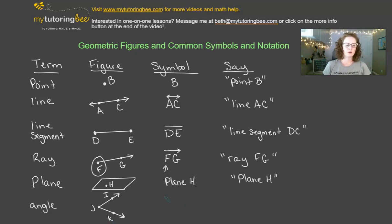And so the symbol for this would be angle I, J, K, or we could say angle K, J, I. Now notice that the J point is in the middle of my notation here both times. And that's because the J is actually where those two end points meet. So whatever that point is, that letter needs to always be in the middle of your notation, and the other two can be on either side.